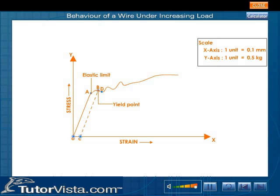The behavior of the wire from D to F is plastic. In this region, strain increases with stress, and the cross-section of the wire decreases uniformly with extension. Beyond F, the length of the wire increases even without any addition of load — at times even if the weight is reduced slightly. The stress corresponding to F is called the ultimate strength or breaking stress. At E, the wire finally snaps, and hence E is called the breaking point.